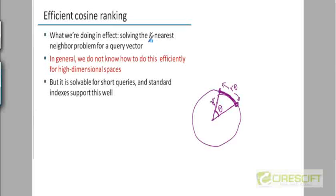So choosing the K nearest neighbor problem. This is a technical term, K nearest neighbors, choosing the K nearest neighbors to the query. Geometrically, this is pretty hard. We don't know how to do this efficiently for very high dimensional spaces.